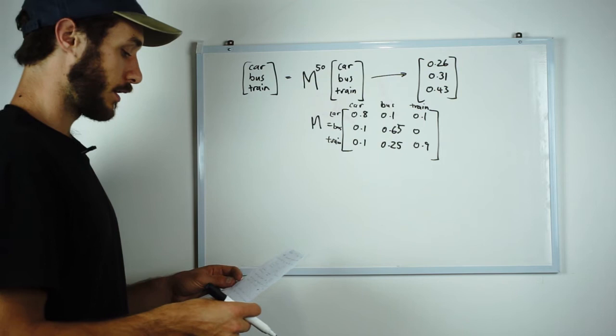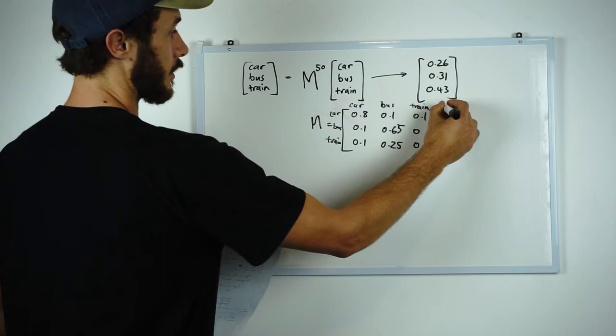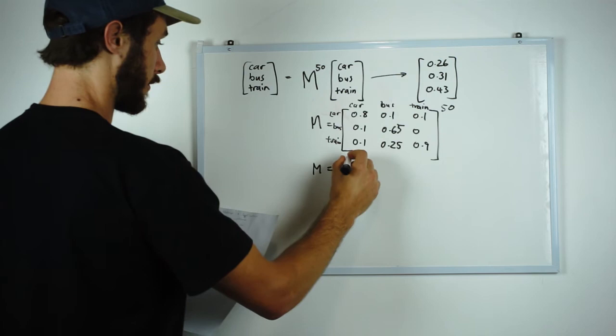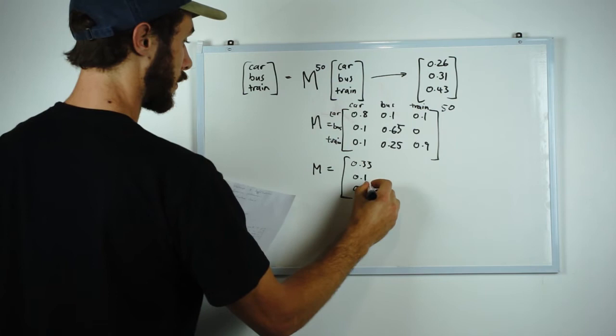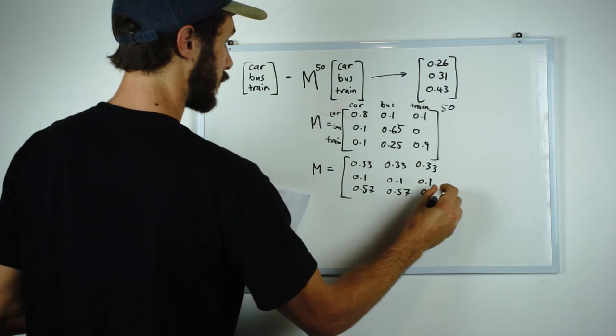Now to do M^50 we can just calculate this and we get an answer of 0.33. So that's our converged matrix.